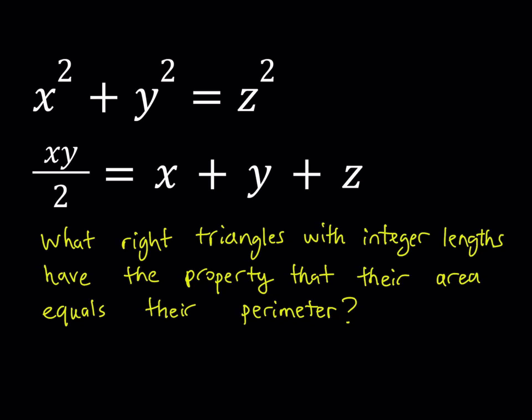So the problem is: what right triangles with integer lengths have the property that their area equals their perimeter? So we're looking for right triangles with this special property where x, y, and z are the side lengths, with z as the hypotenuse, the longest length in the triangle.